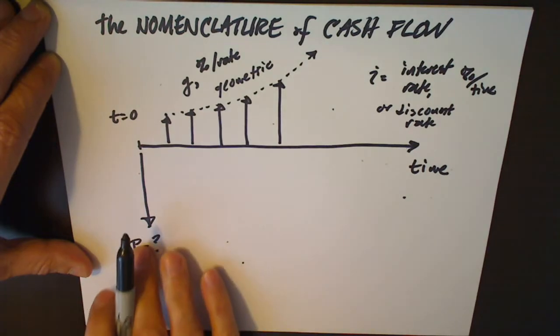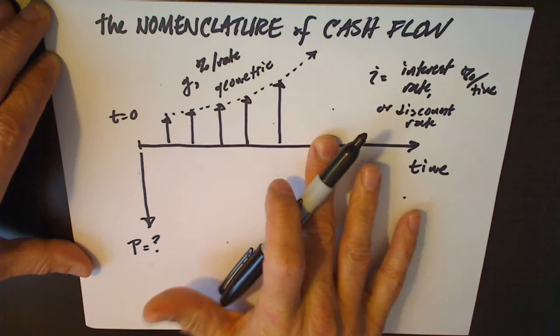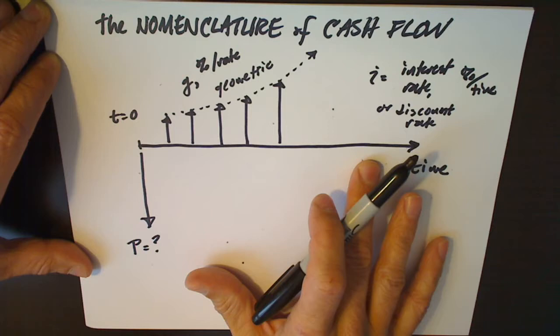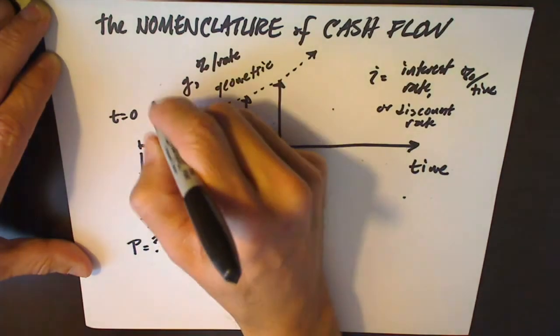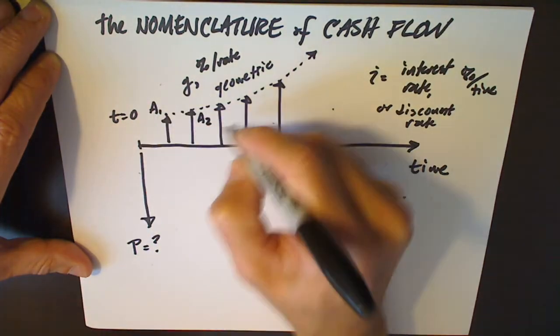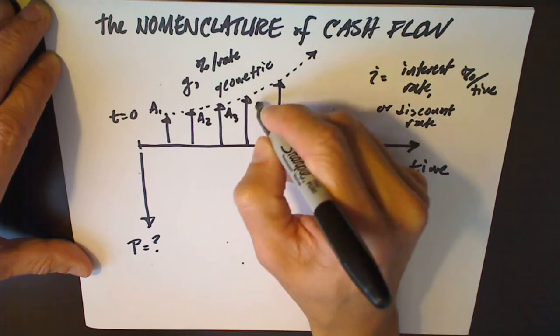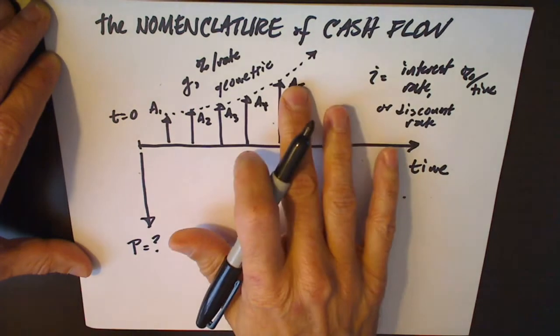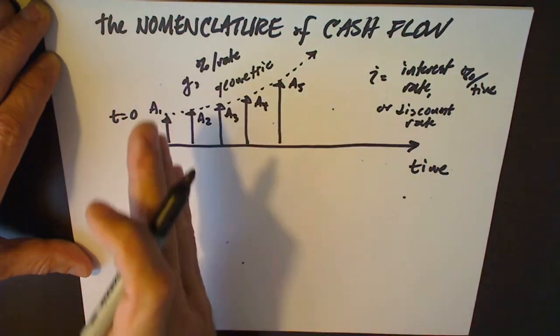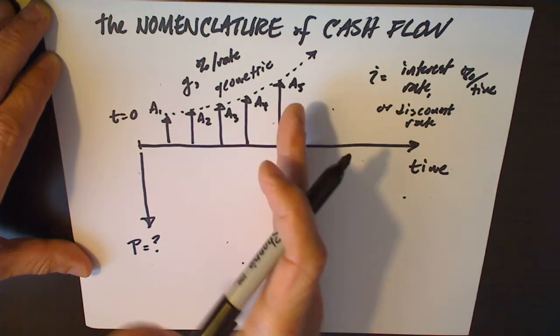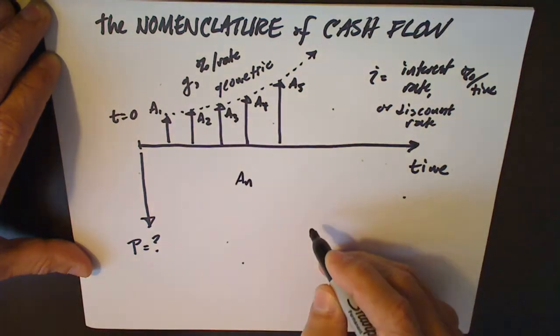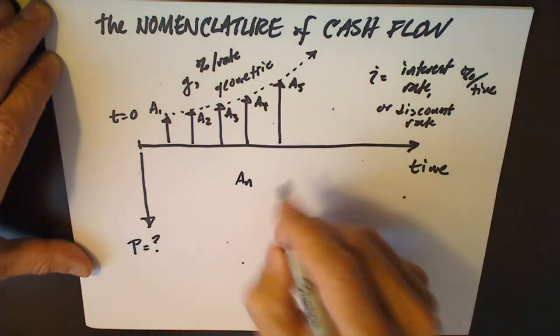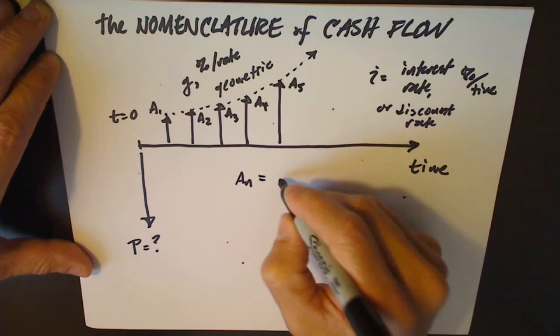Instead of a uniform series like an annuity, think of each one of these A1, A2, A3, A4, A5, think of each one of these as different. They're no longer uniform, but they are regular payments. So we're gonna call those A to the n. Each one of them has a different value.